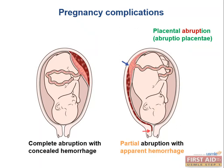Placental abruption, also known as abruptio placentae, is the premature detachment of the placenta from the uterine wall that can cause painful bleeding during late pregnancy. It is the most common cause of life-threatening bleeding in the third trimester. The USMLE wants you to know that it's painful bleeding. If they mention painless third trimester bleeding, they're referring to placenta previa, whereas painful third trimester bleeding refers to placental abruption.